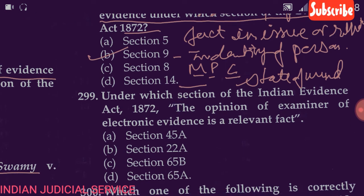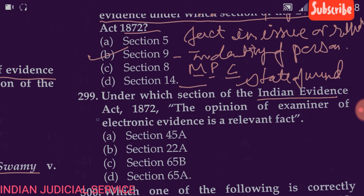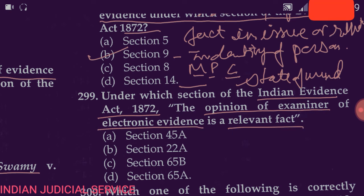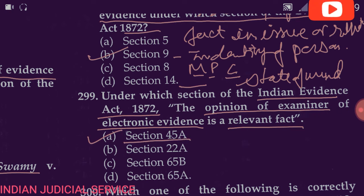Question 299: Under which section of the Indian Evidence Act 1872 is the opinion of an examiner of electronic evidence a relevant fact? Option A is correct — Section 45A. The opinion of an examiner of electronic evidence is relevant under Section 45A.